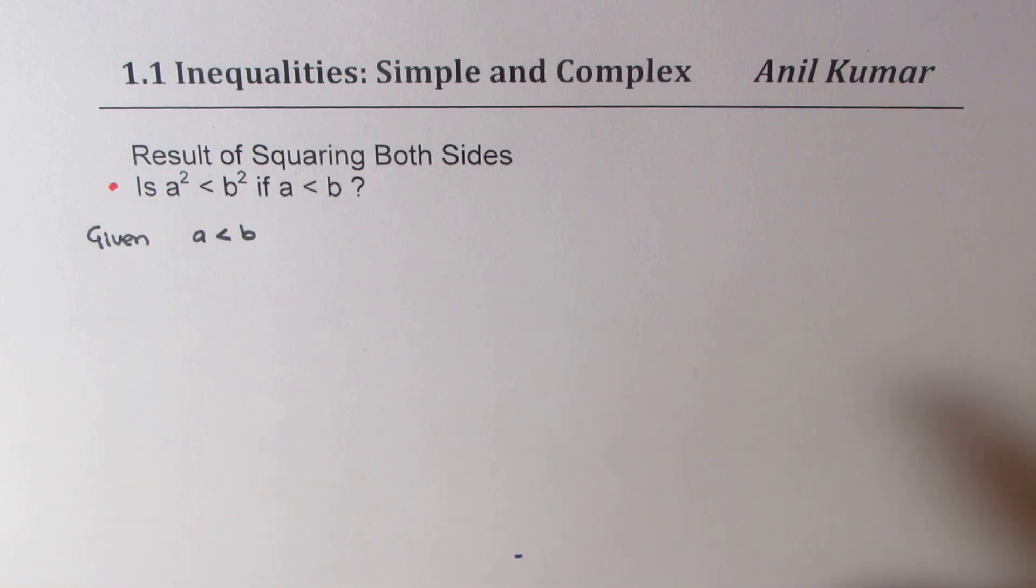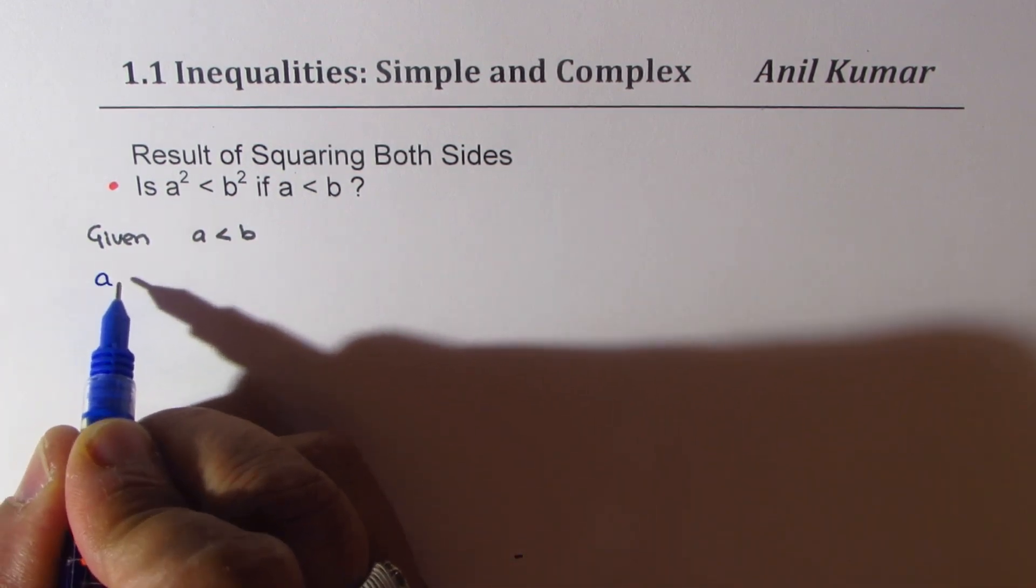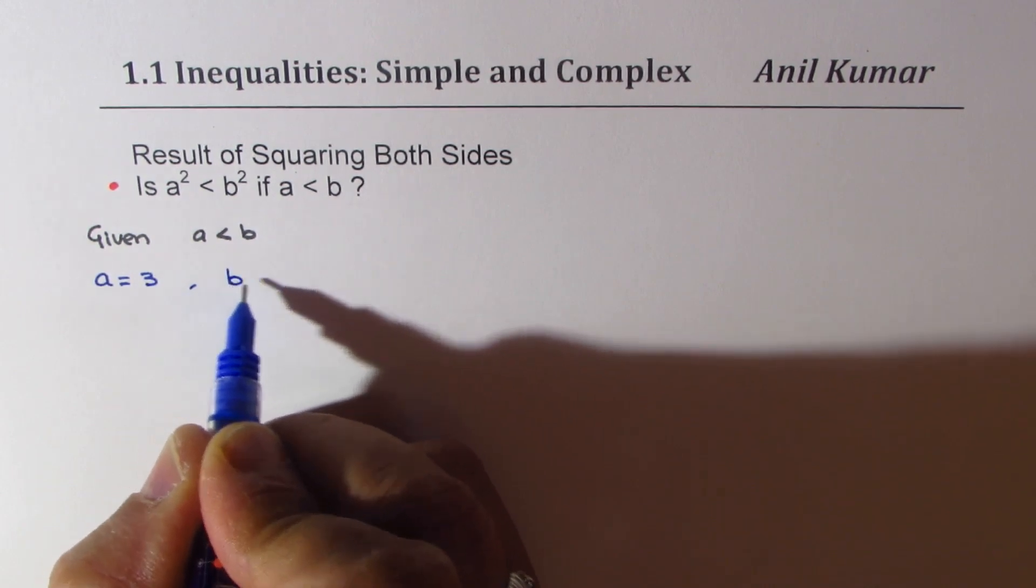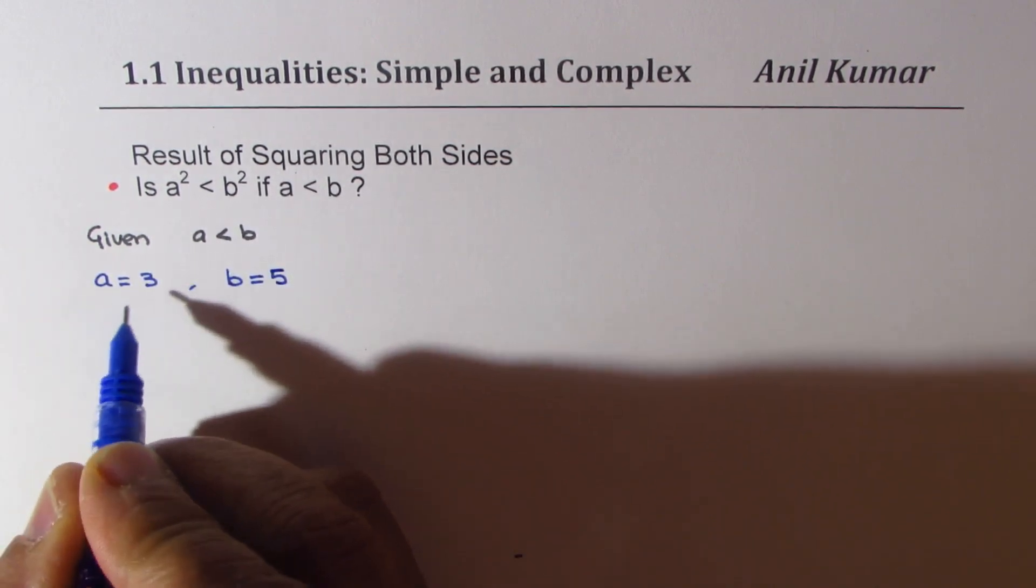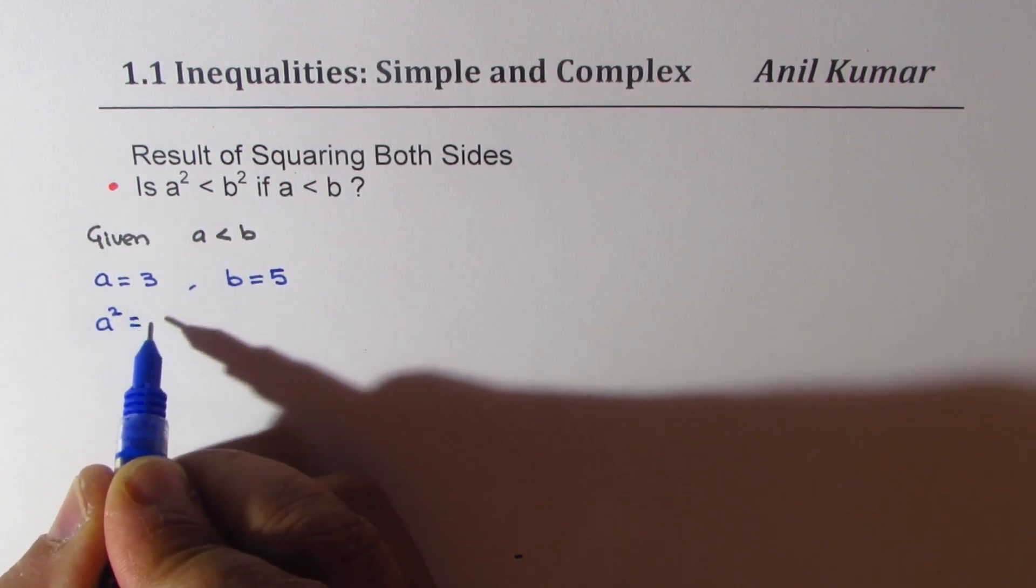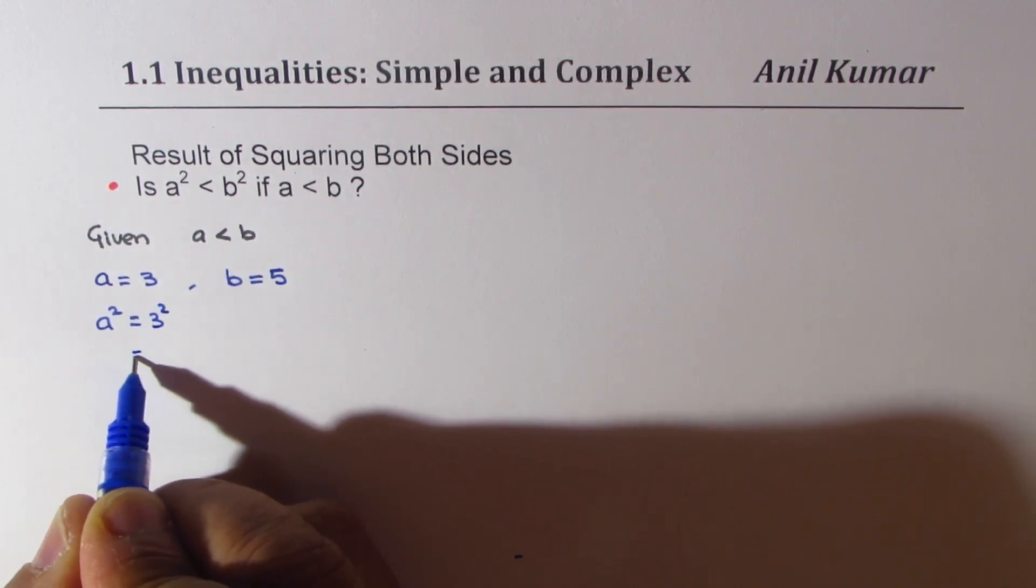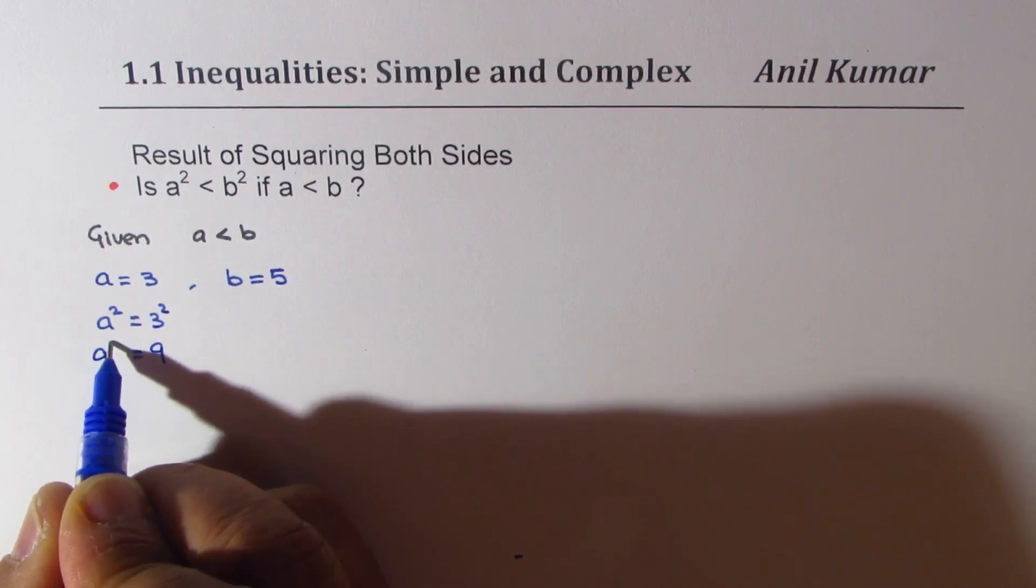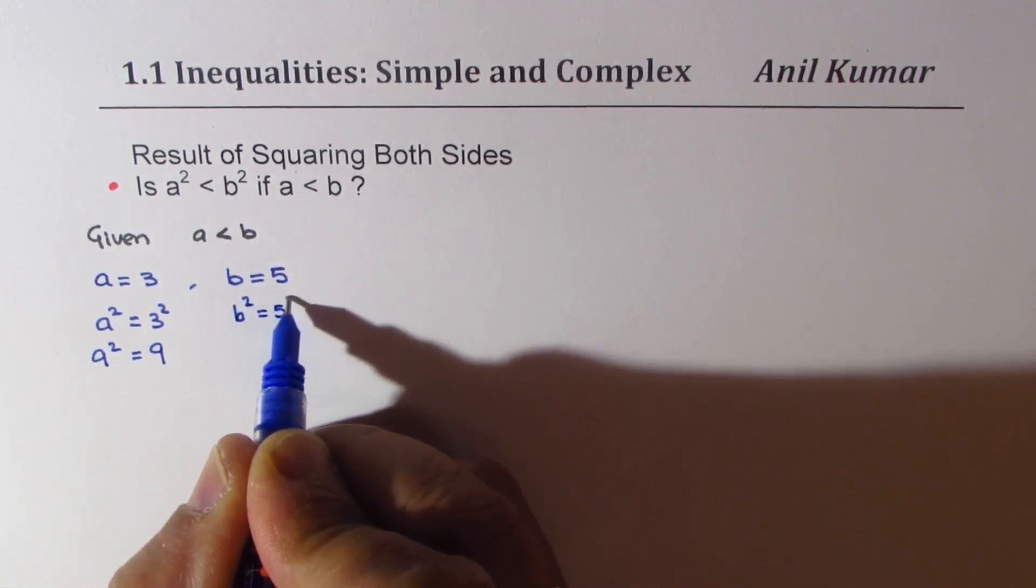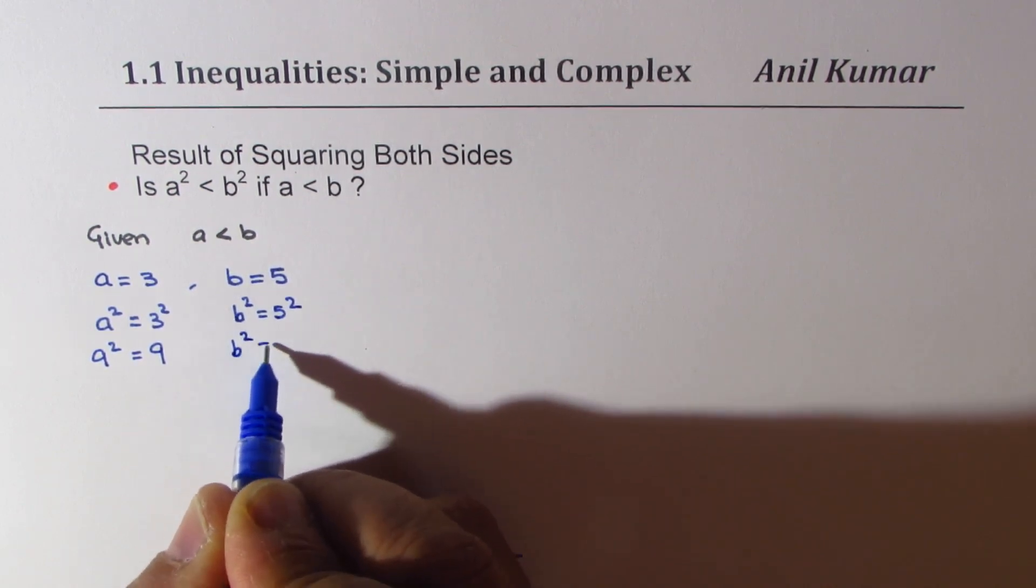Since a < b, I could take a = 3, and I could take b = 5. So, in that case, what is a²? a² is 3² which is 9. So, a² = 9, and b² will be 5². So, b² = 25.